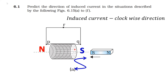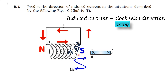Next, we have to see the coil — how it is coiled. It is coiled like this, so the clockwise direction should be like this. So, the induced current direction is Q or PQ. This is the answer.